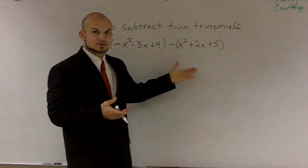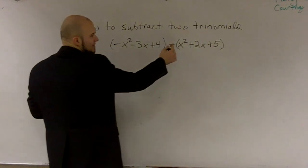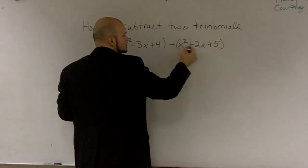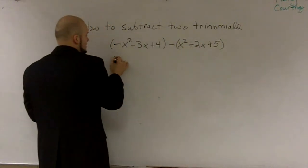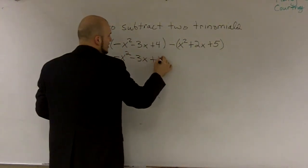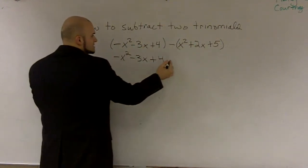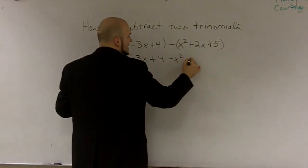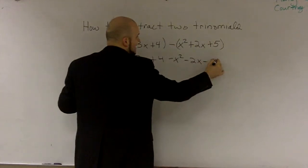So what I'm going to do just to help you understand it is I'm going to rewrite this and I'm going to distribute that subtraction sign to all three of my terms. So I have a negative x squared minus 3x plus 4, and I don't really need to write the parentheses, minus an x squared minus a 2x and minus a 5.